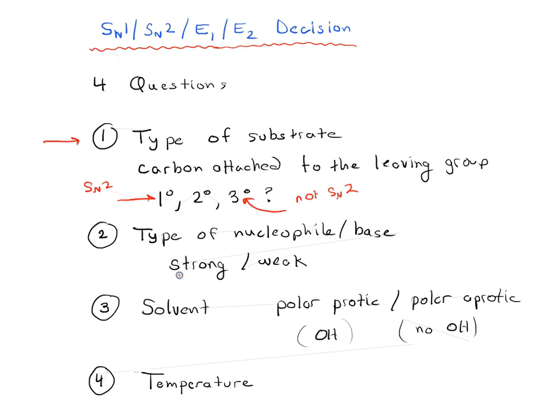The type of nucleophile and base. We said that if the nucleophile or base was strong, in other words, it was charged really, that was just a proxy for charged, it was going to be SN2 or E2. And if it was weak, so in other words neutral, it was going to be E1 or SN1.